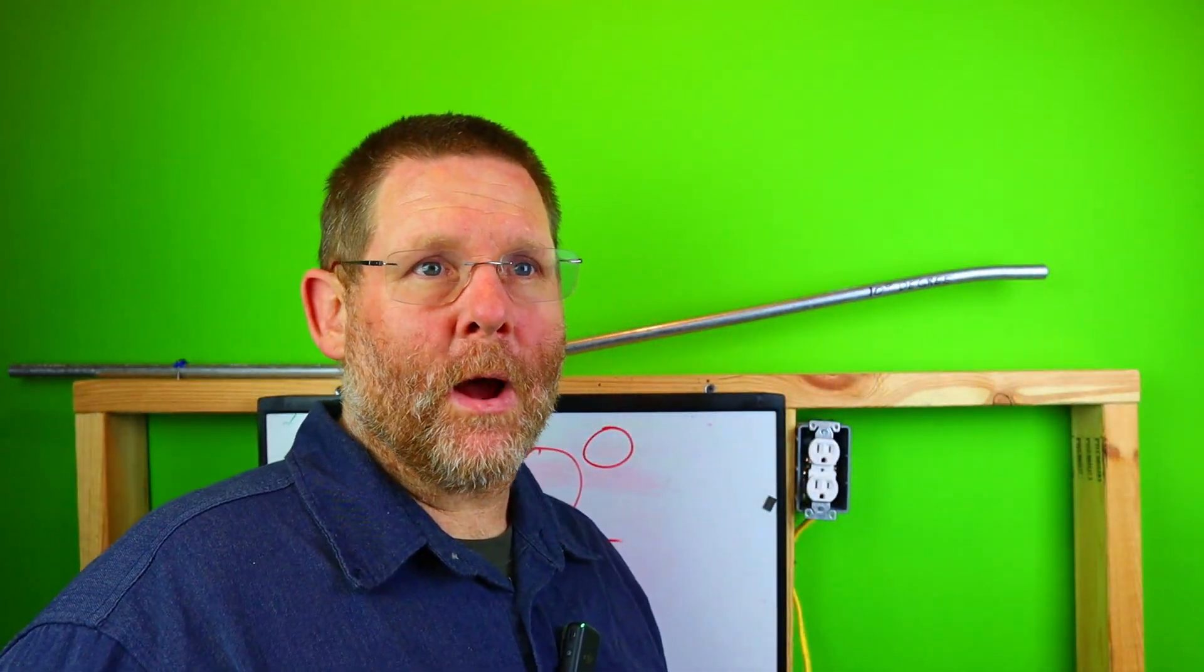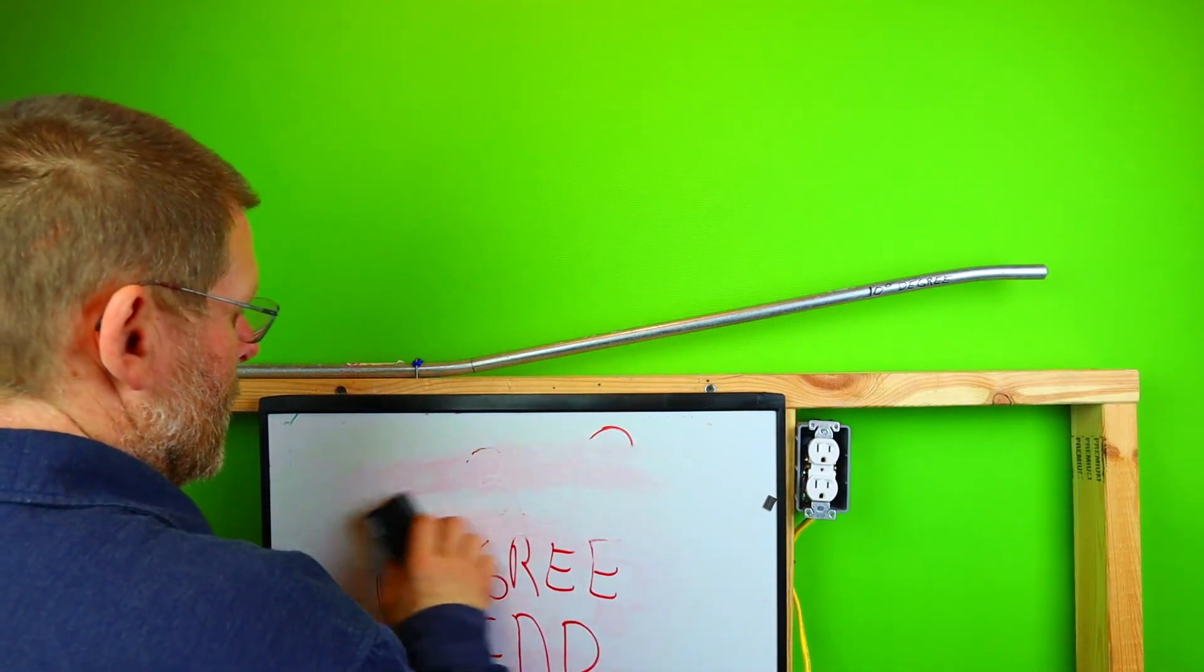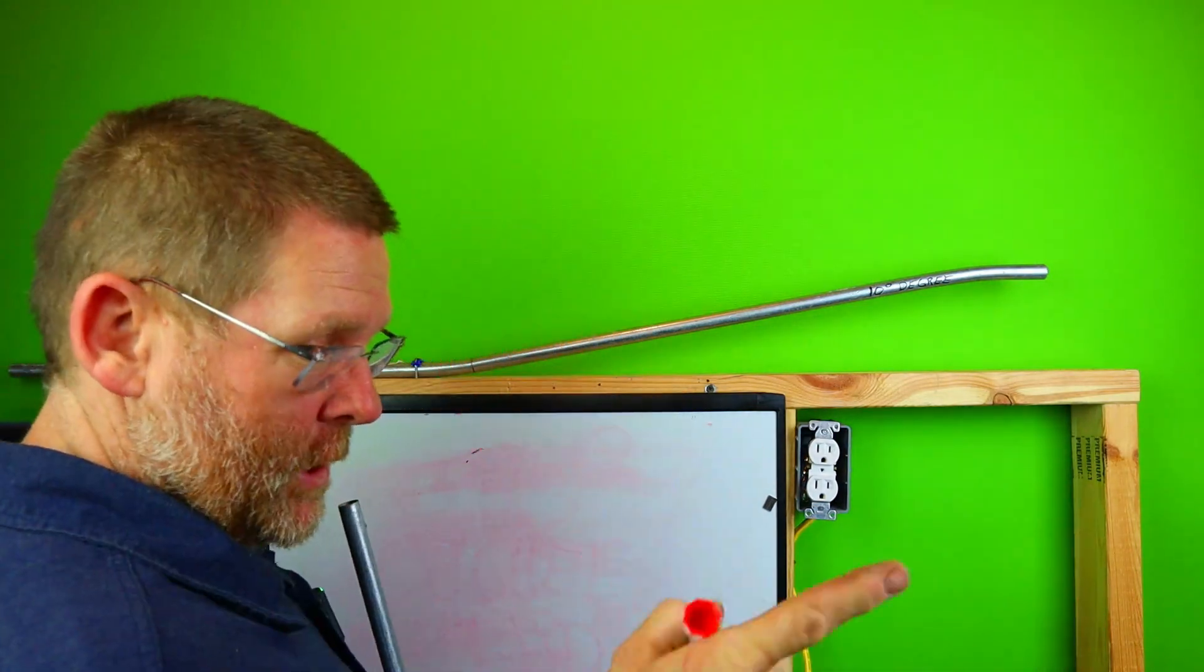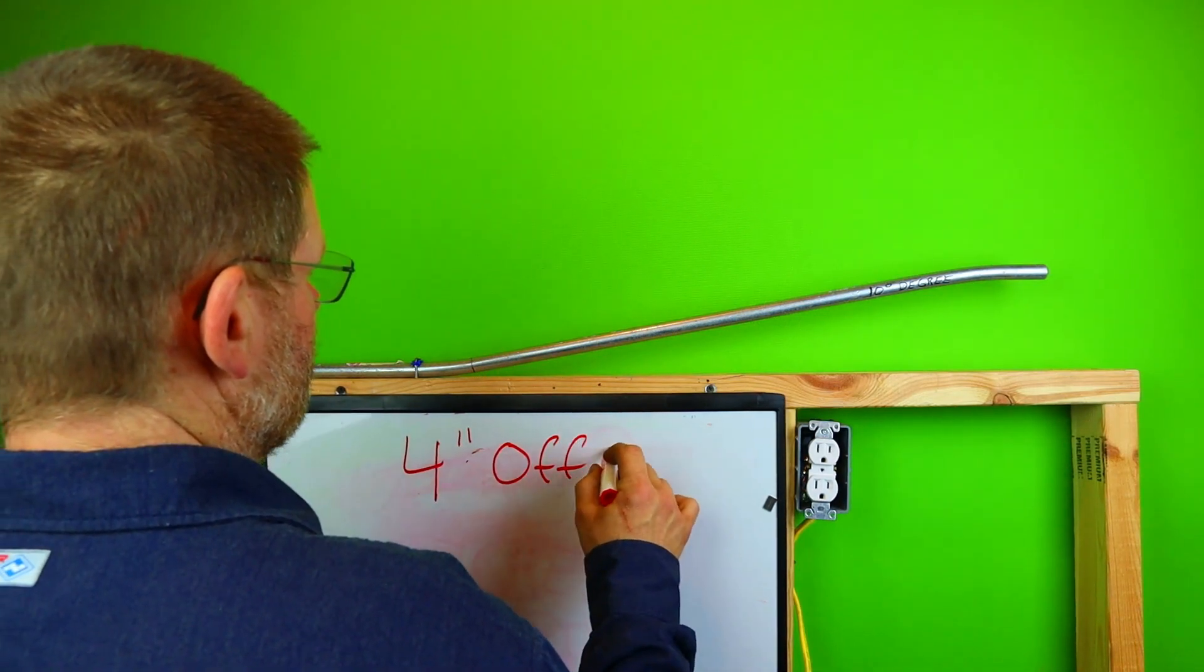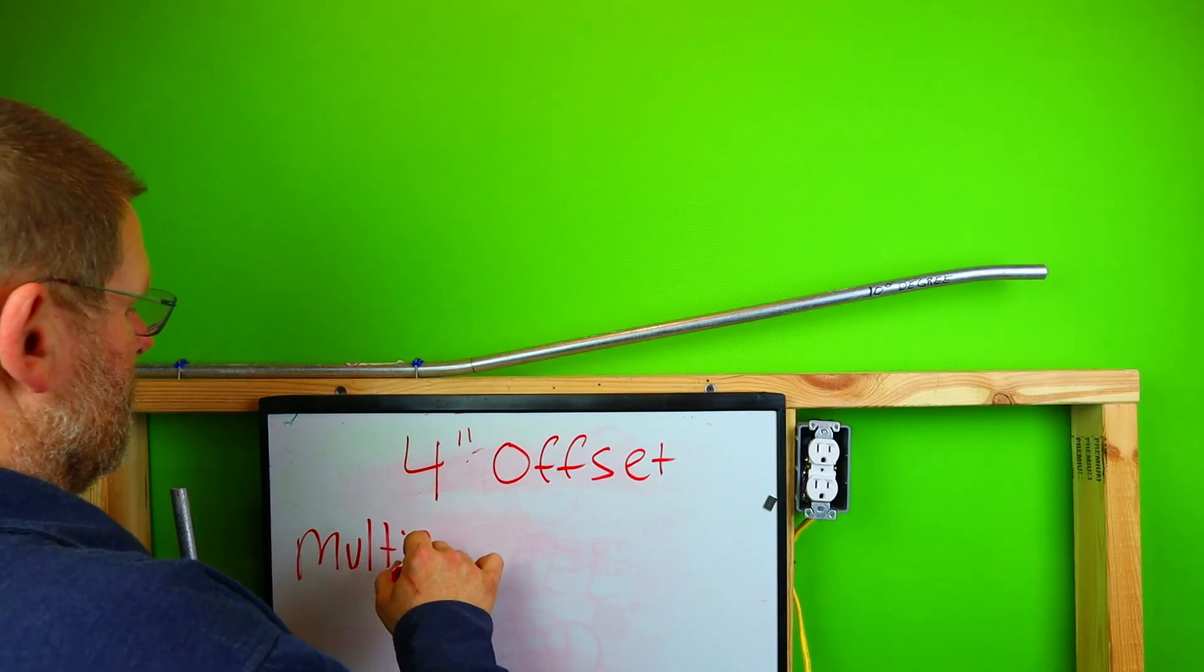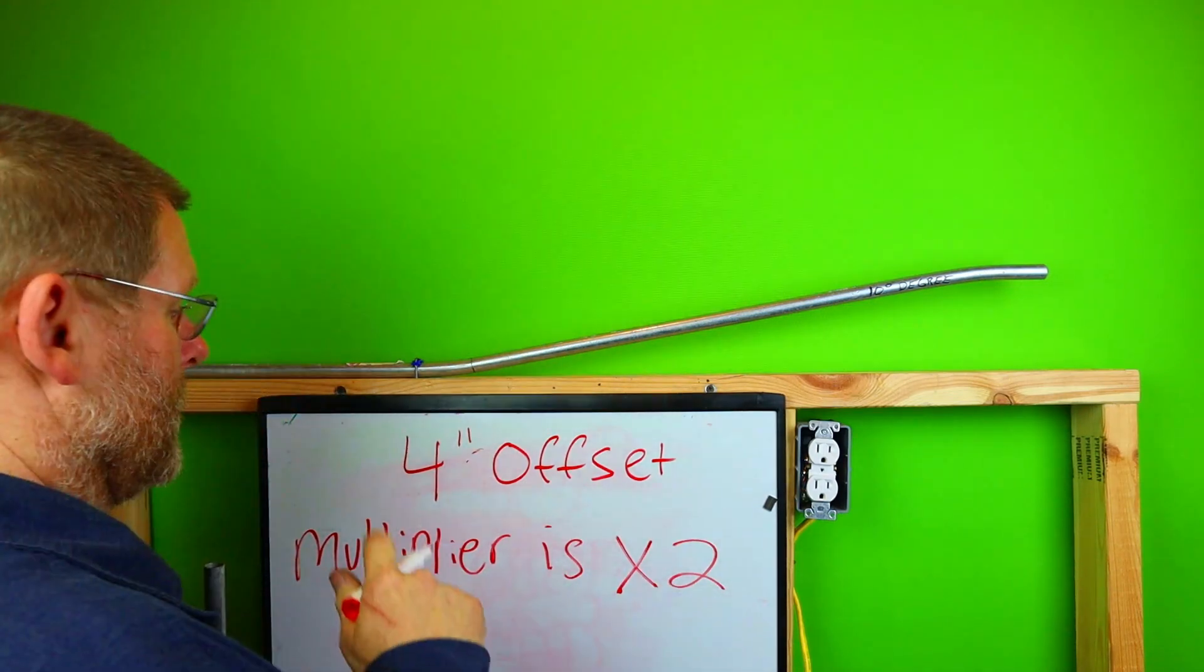Today we're talking about the 30-degree bend, the most widely used bend in all of electrical. It's the easiest one to remember. We're bending a 4-inch offset. How do we do the 4-inch offset 30-degree bend? Let's talk about it. What does the cosine chart say? 4-inch offset multiplier is times 2.